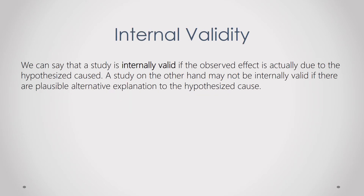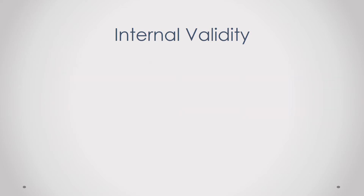We can say that a study is internally valid if the observed effect is actually due to the hypothesized cause. A study may not be internally valid if there are plausible alternative explanations to the hypothesized cause. To give an example — this is a sample — I hypothesize that bad internet connection at home causes a decrease in participation in discussion forums.